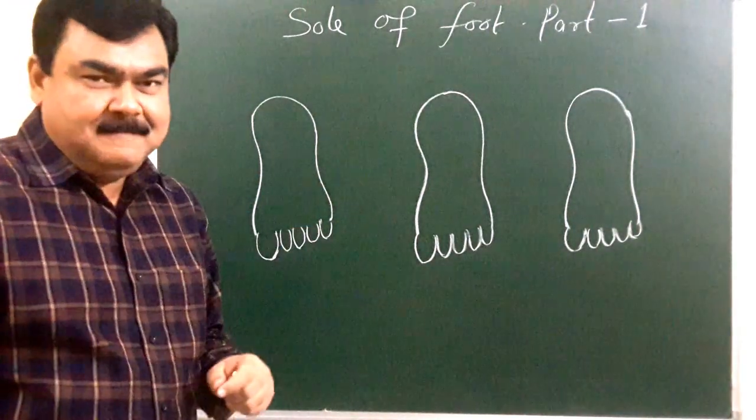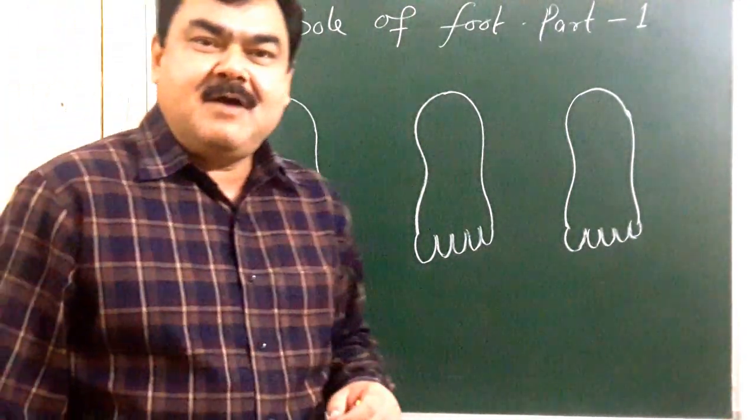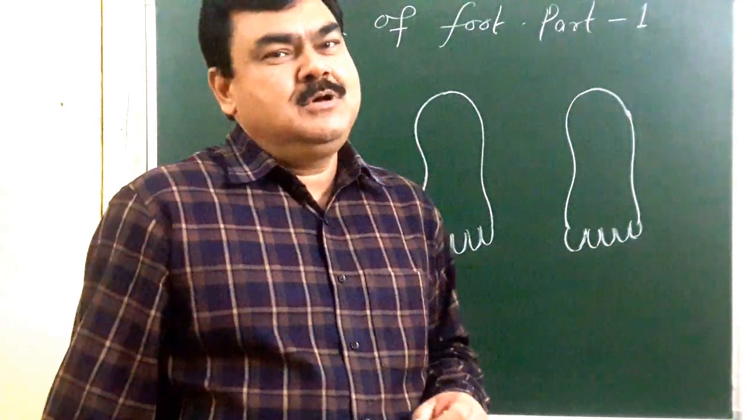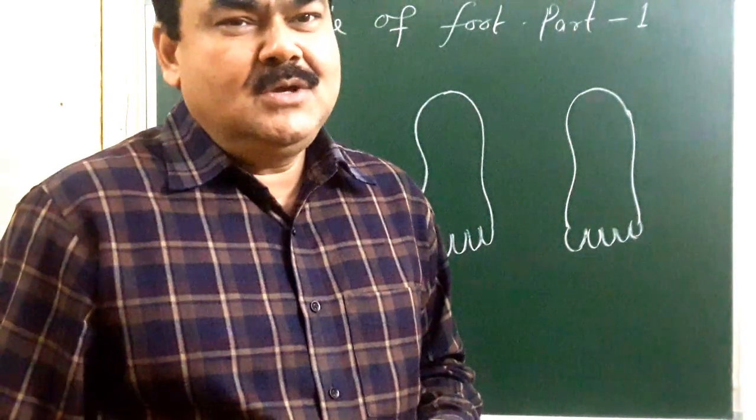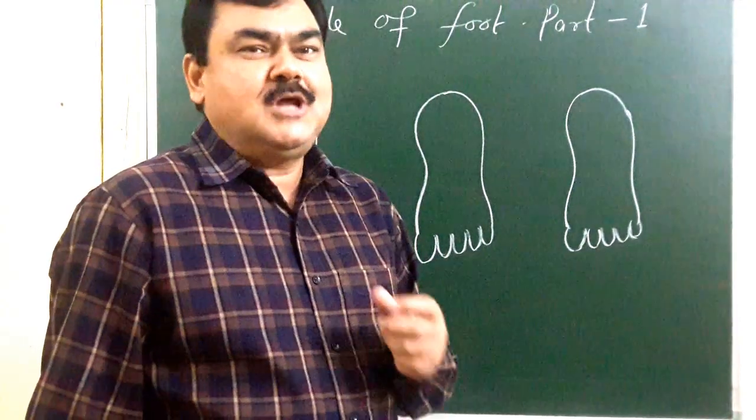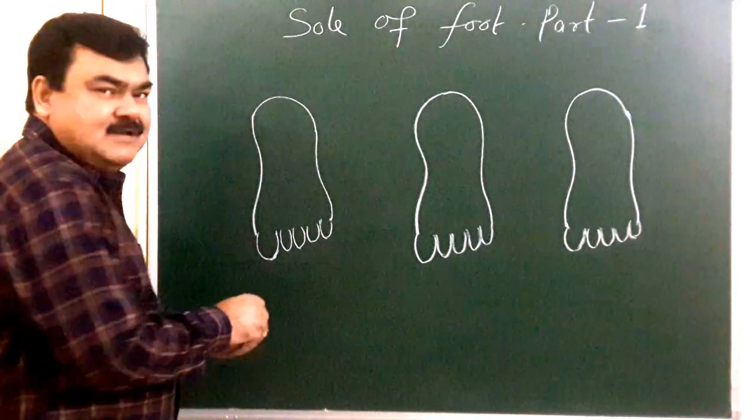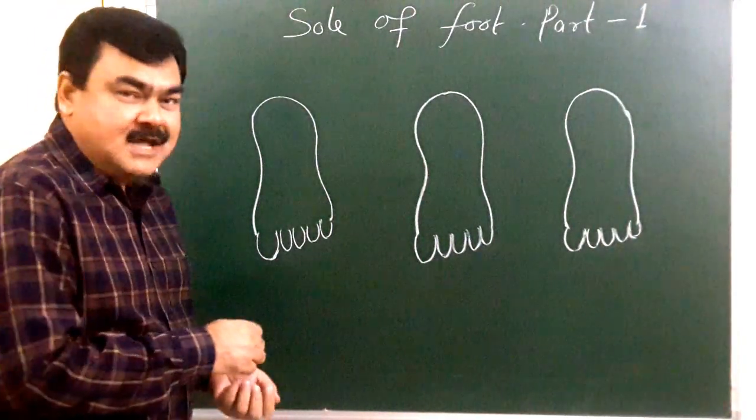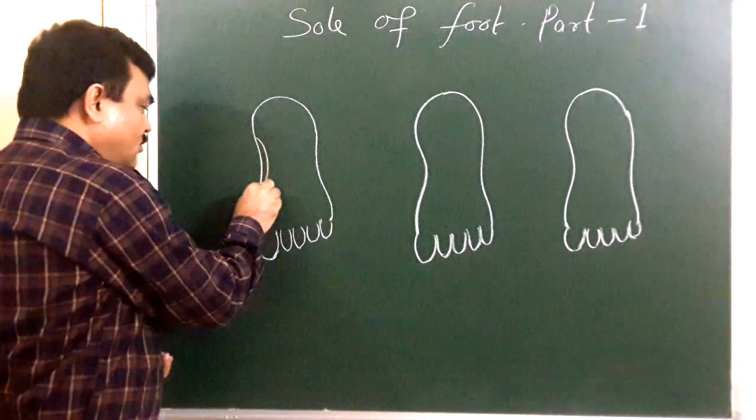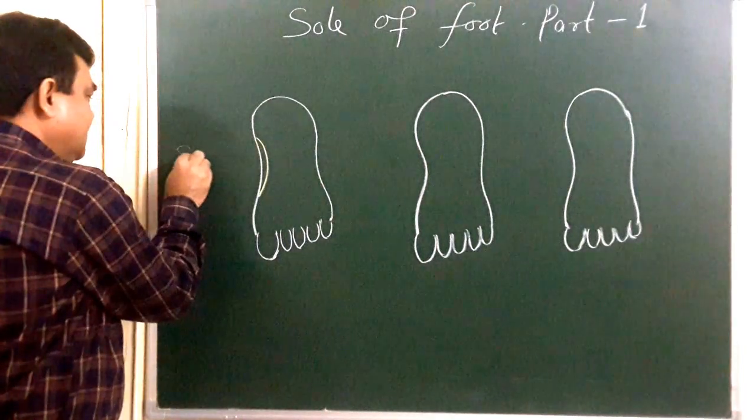After removing the skin you will see the superficial fascia which is made up of fibro fatty tissue. Here fibro fatty tissue forms several compartments which enclose the fat. Thus it acts as water cushion. And in superficial fascia, numerous nerves are present. These nerves are towards the middle side. Here is the surface gland.